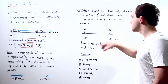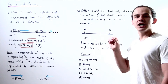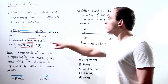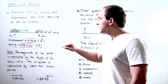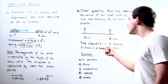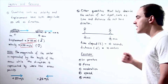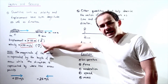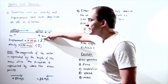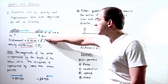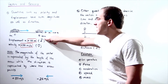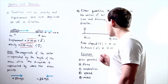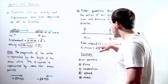None of these quantities have direction, so they are scalars. Notice that both displacement and distance are given by the symbol d. To differentiate between them, we look for the arrowhead: if there is an arrowhead on top of the d, we are dealing with displacement; if there is no arrowhead, we are dealing with distance, a scalar value.